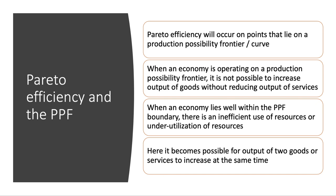Pareto efficiency will occur on any point that lies on the production possibility frontier or curve itself. Because when the country is operating on a PPF, it's not possible to increase output of goods or services without reducing the output of something else — we have to make an output sacrifice.